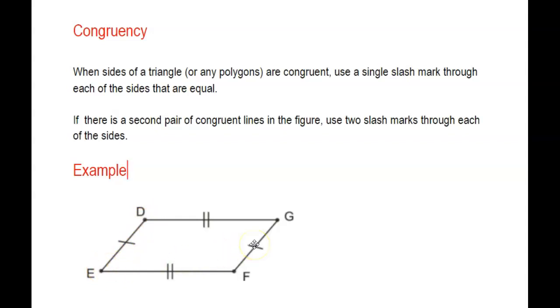If you look at this example, I'm saying that the length DE is equal or congruent to the length FG. Again, go by the alphabet to determine which letter comes first. If a second set of lines are in the figure that are also congruent, use two slash marks.